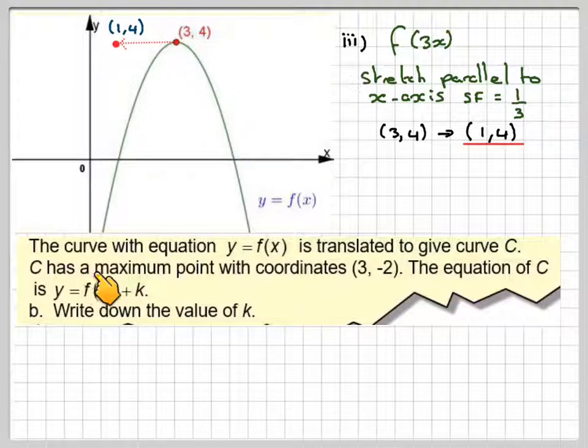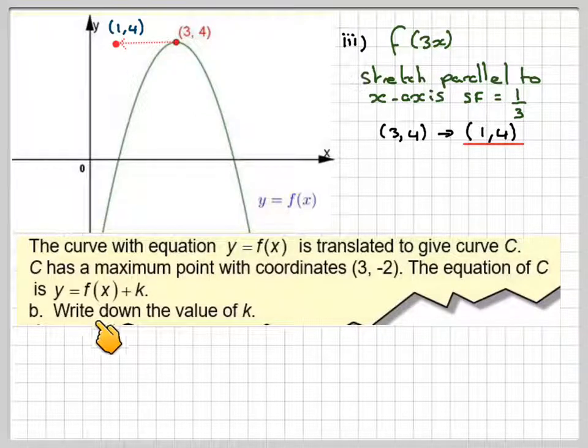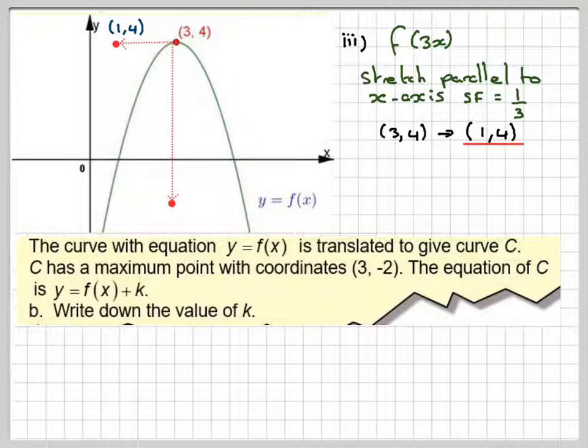Now the last part: it says the curve with equation y equals f of x is translated to give curve C. C has a maximum point with coordinates (3, -2). The equation of C is y equals f of x plus k. Write down the value of k. So what happens is that this curve now moves down 6 units.